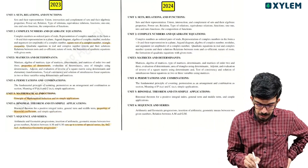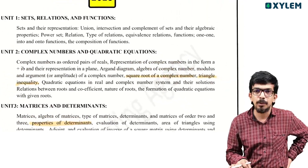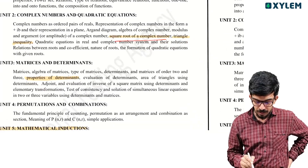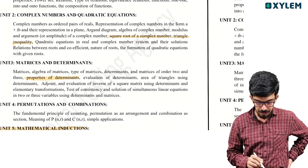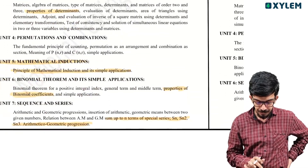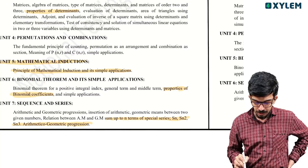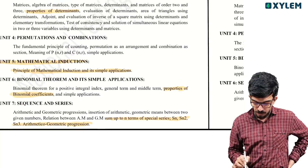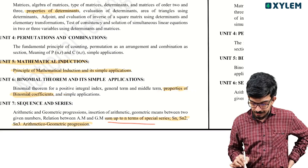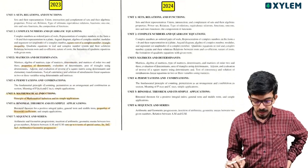I want to talk about the topic of relations and functions. Complex numbers and quadratic equations are removed. The properties of determinants — matrices and determinants — are removed. Mathematical induction is completely removed. The properties of binomial coefficients are removed. In the sequence and series chapter,